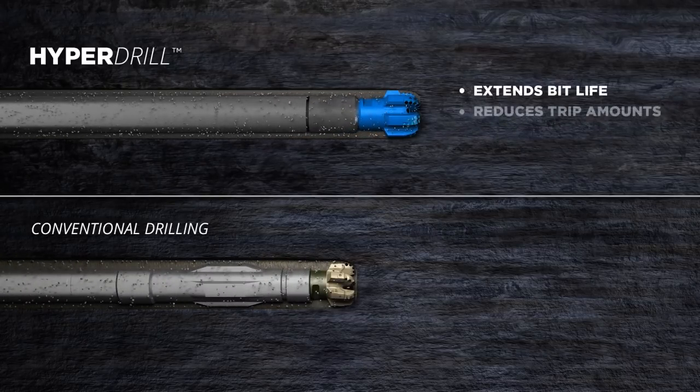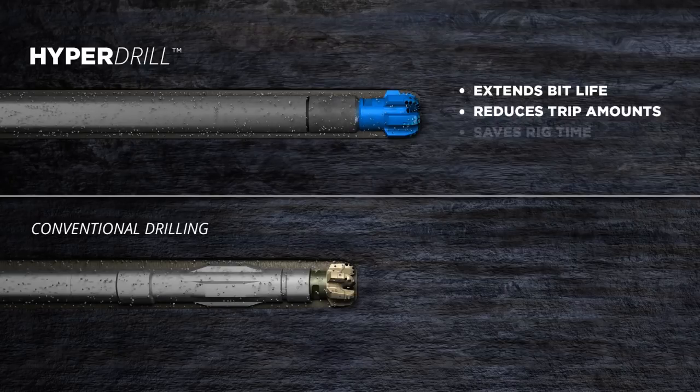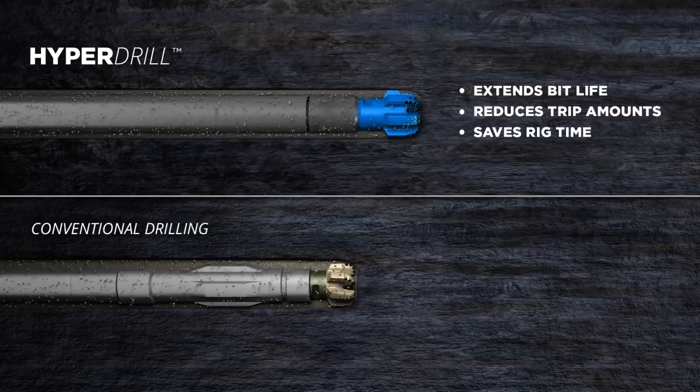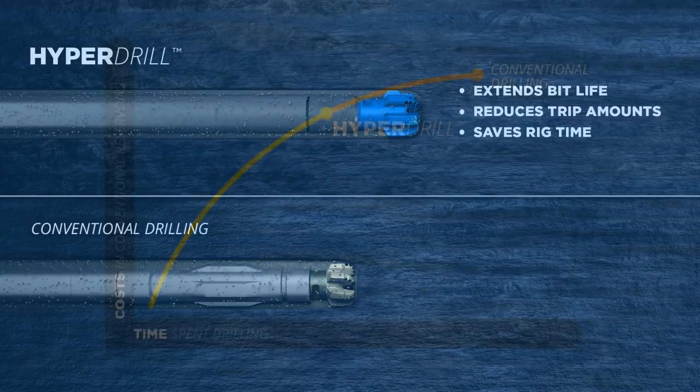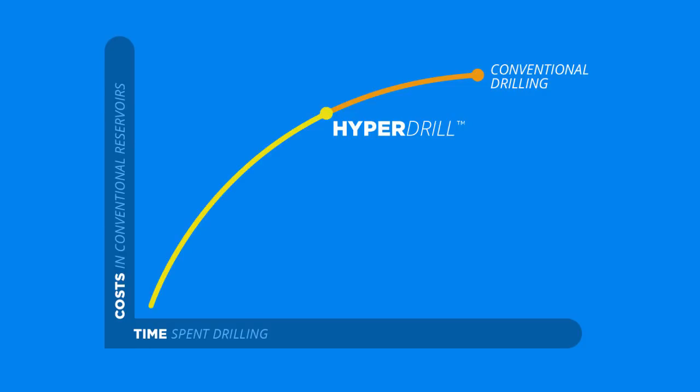HyperDrill extends bit life, reducing the amount of trips and therefore saving rig time, especially in hard rock and high pressure borehole conditions. This acceleration of hard rock drilling significantly lowers drilling costs in conventional reservoirs, as well as enabling access to new and unconventional plays.